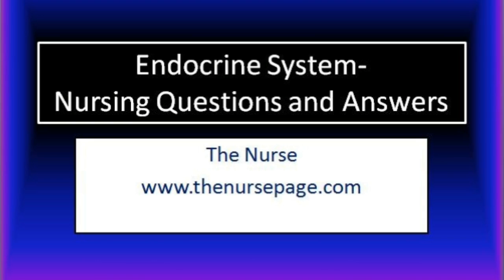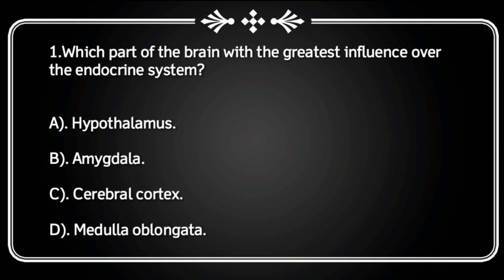First question: Which part of the brain has the greatest influence over the endocrine system? Hypothalamus, amygdala, cerebral cortex, or medulla oblongata? Correct answer is hypothalamus.